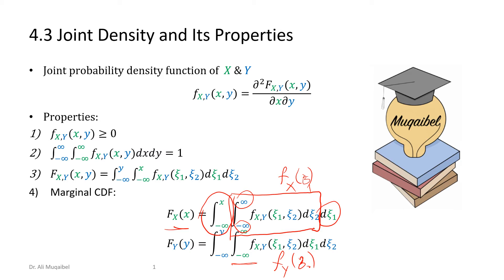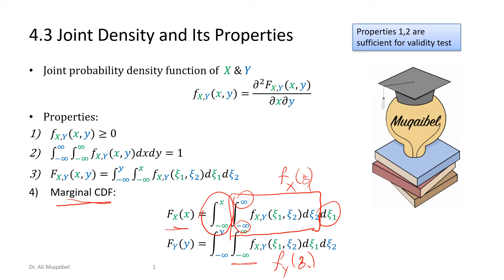These properties are very similar to what we had for single random variables, but for a single random variable there is no meaning for marginal because we have only one. A marginal CDF is not the joint — it's just with respect to one random variable. Properties one and two are sufficient for a validity test. If you have a joint PDF and want to test whether it's valid, just make sure the area, volume, or integration gives you one, and always yields a non-negative quantity — greater than or equal to zero.